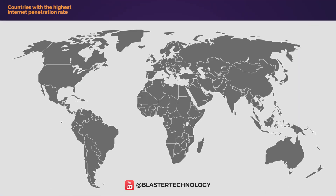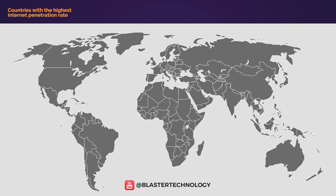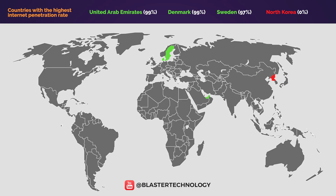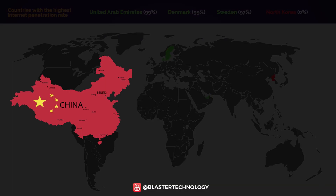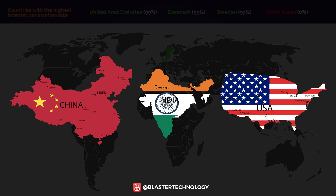The countries with the highest internet penetration rate worldwide are the United Arab Emirates, Denmark and Sweden. At the opposite pole is North Korea with no penetration of internet use. China, India and the United States are the countries that rank first in terms of the number of internet users.